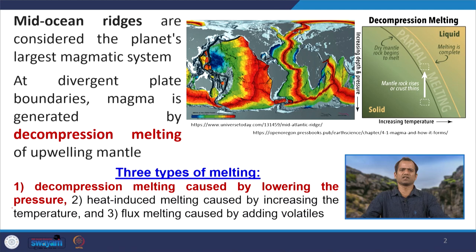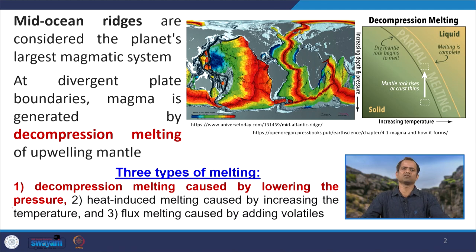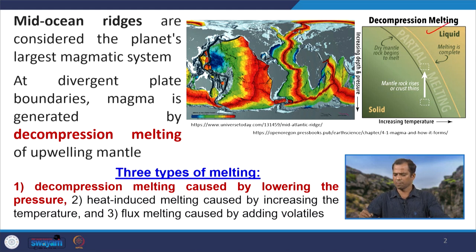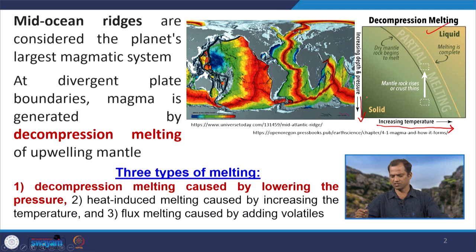At divergent plate boundaries, magma is generated by decompressional melting. If you see this diagram, temperature increases in one direction and pressure — that is depth — increases in the other direction. The black line indicates the dry mantle rock solidus, the point at which melting begins. Below this line all rocks are solid.